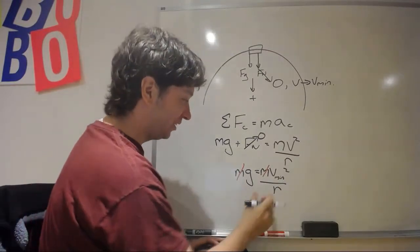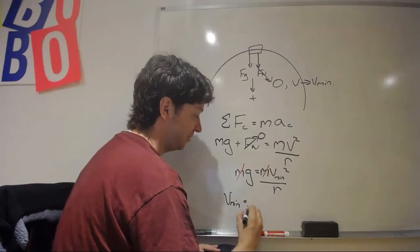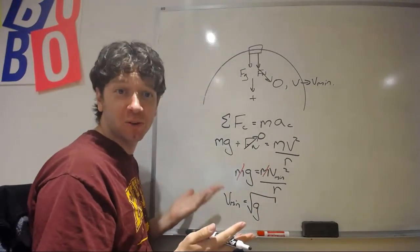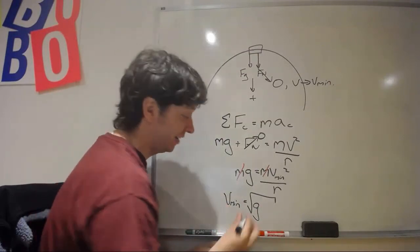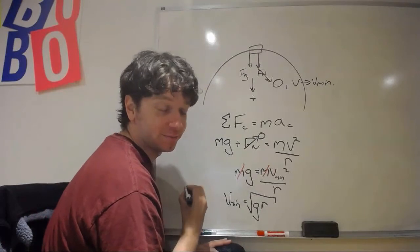But that's not the case, because if we look at it, the minimum velocity is just related to gravity, which we're building a roller coaster on the Earth. We can't control that. And, the radius of the loop.